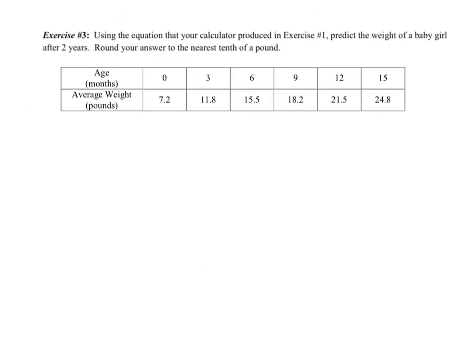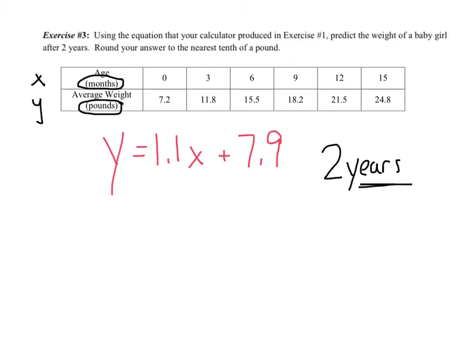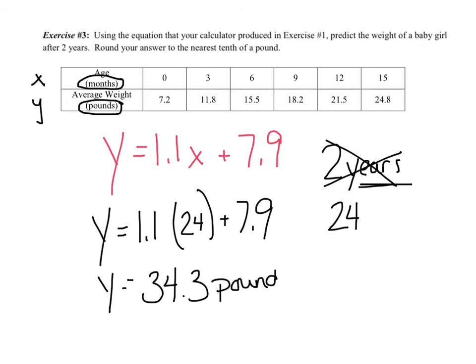Exercise 3 says, using that equation that your calculator produced in exercise 1. So, again, let's rewrite it. So, Y equals 1.1X plus 7.9. Predict the weight of a baby girl after 2 years. So, ask yourself, they tell you 2 years. Are they telling you the X value or the Y value? Well, yours doesn't match up with either of them. So, let's use a little common sense. I have to use months or pounds. Which one does this actually correspond to? Hopefully, you're saying months. You can't plug 2 in because this table is in months. What number could you plug in? Have you got it? Hopefully, you're thinking 24 because my table is in months. So, I would say Y equals 1.1 times 24 plus 7.9. And again, all on the same line. I get an answer of 34.3 pounds.